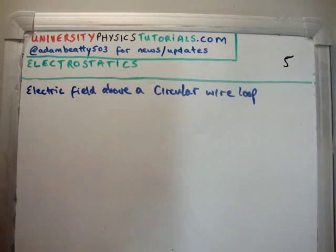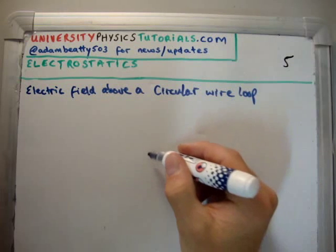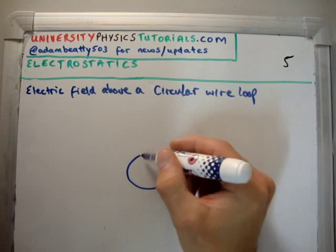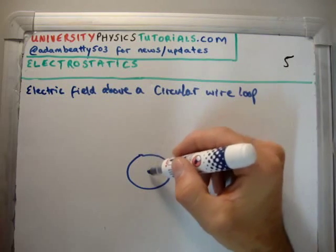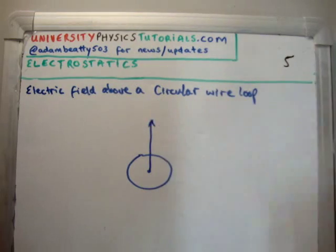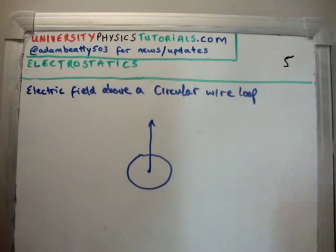So what we're going to do this time is look at the electric field of a wire shaped as a circular loop. To set the problem up we need to draw it. This is our circle. We're trying to evaluate the field above the centre of the circle at a point P.